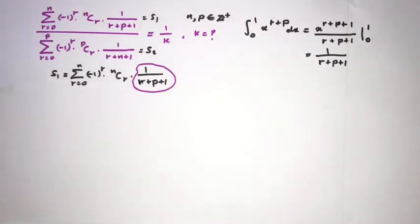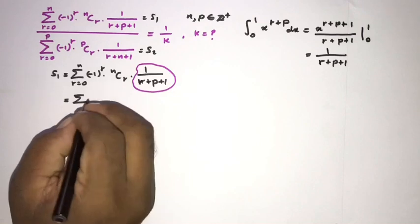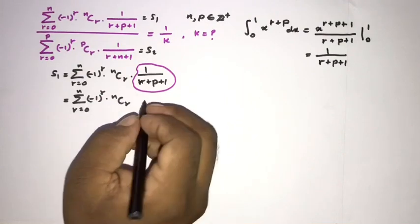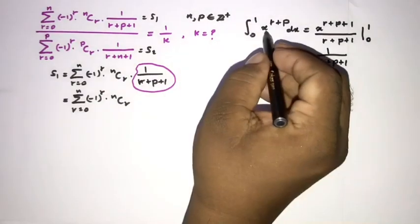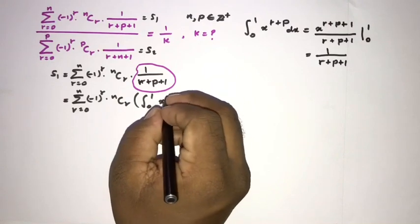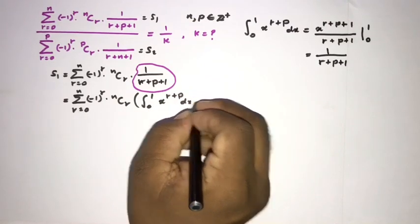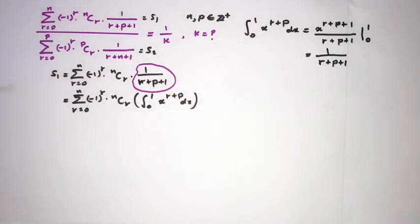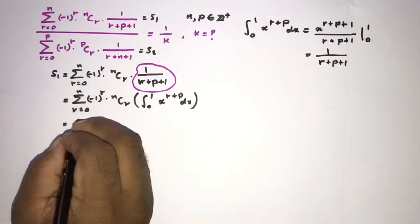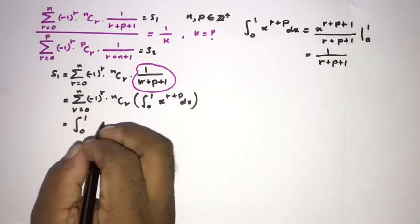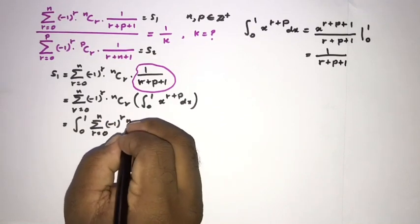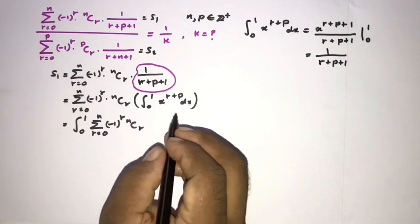Applying the integral, we get x to the r plus p plus 1 over r plus p plus 1 evaluated from 0 to 1, which gives 1 over r plus p plus 1. So we can write S1 as the sum from 0 to n of minus 1 to the r times n choose r, and replace the 1 over r plus p plus 1 term with the integral from 0 to 1 of x to the r plus p dx. We then interchange the integral sign and sigma notation.